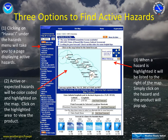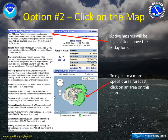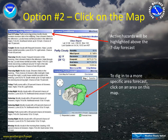Now let's take a look at number two — clicking right on the map. You click on the map, it zooms in and gives you a forecast point for where you clicked. It lists the seven day forecast, current conditions, and gives you an option in this map to click even further in to get a different forecast. Now if a watch, warning or advisory is present — even a short term forecast for that matter — it will be listed as a link above the first period in the seven day forecast. Simply click on that link and you'll be brought to the product.